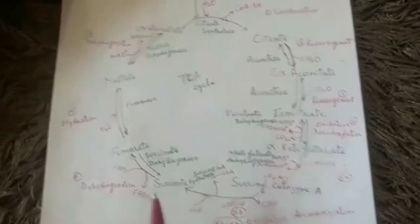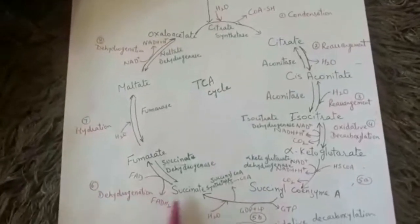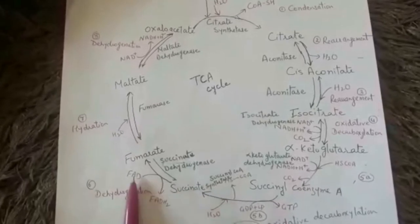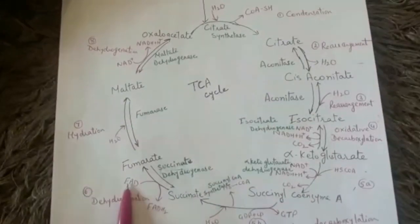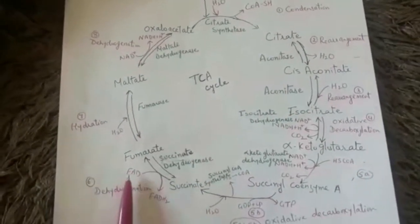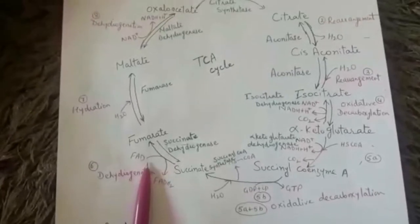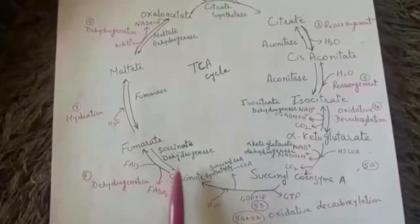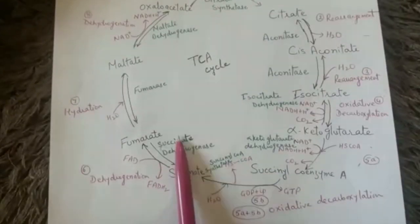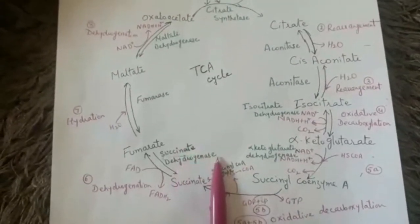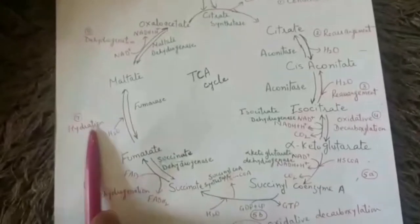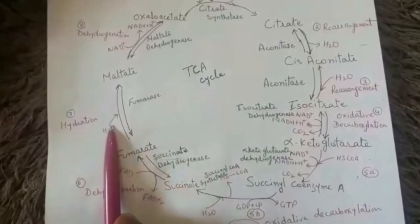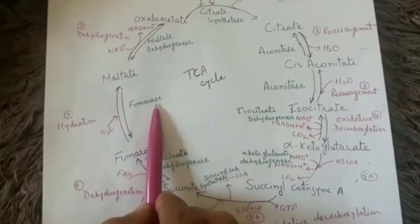The sixth step is dehydrogenation: succinate loses a pair of hydrogen atoms, which are picked up by FAD (flavin adenine dinucleotide), reducing it to FADH2. The enzyme is succinate dehydrogenase. The seventh step is hydration — addition of water. Fumarate, in the presence of fumarase enzyme, changes into malate.